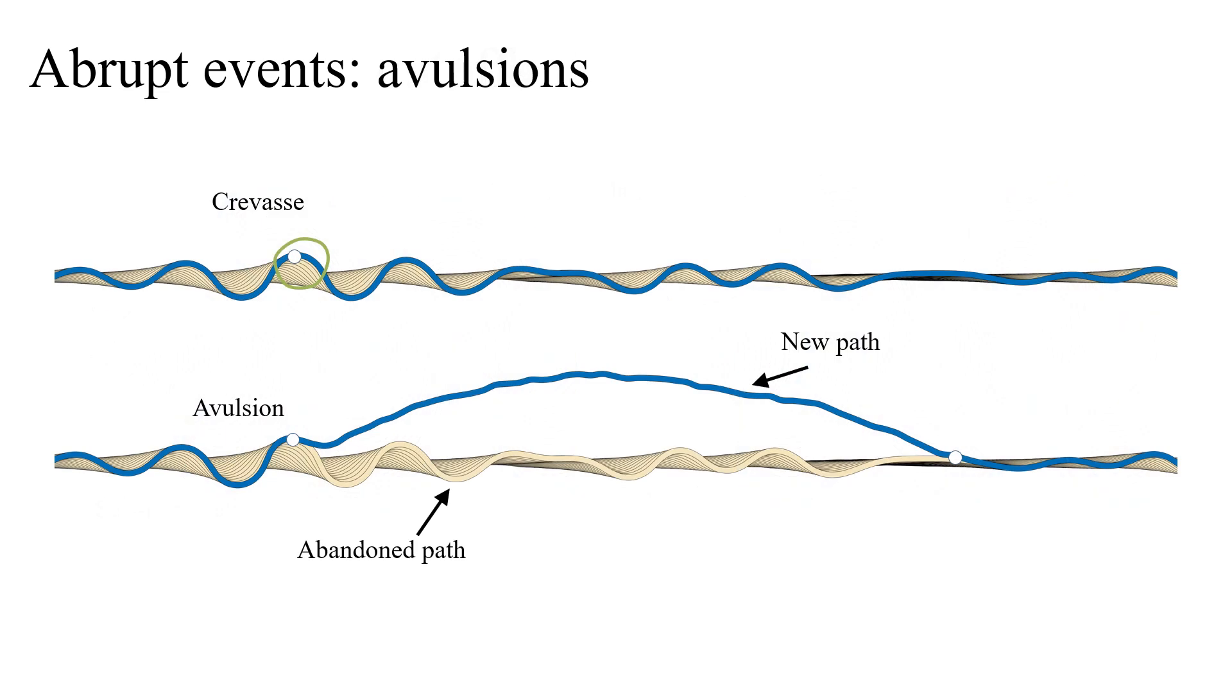Avulsions are another important phenomenon in meandering rivers. They occur at the location of crevasses, which usually appear at high curvature spots along the channel. While the exact triggering conditions of avulsions remain an active area of research in geomorphology, they may be related to intense rainfall causing sudden overflow in the channel. The upstream part remains unchanged, whereas the downstream part is abandoned and replaced by a completely new path starting at the location of the crevasse.